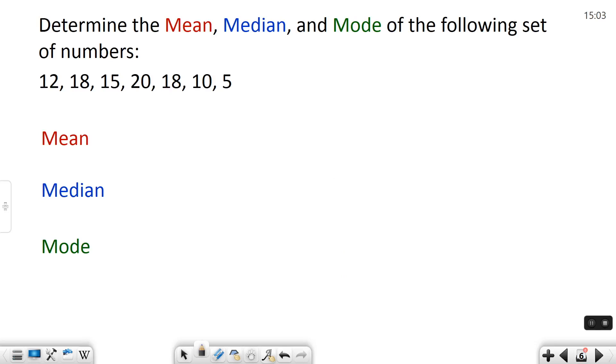So we have 5, we have 10, 12, 15, a couple 18s, and a 20. So now they're in order I can start figuring out mean, median, and mode.